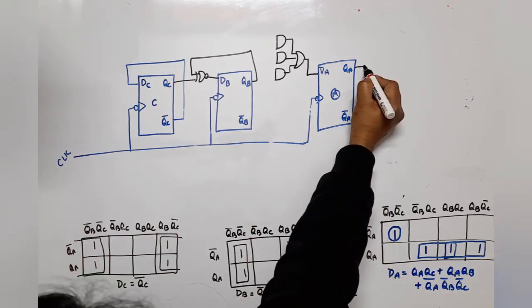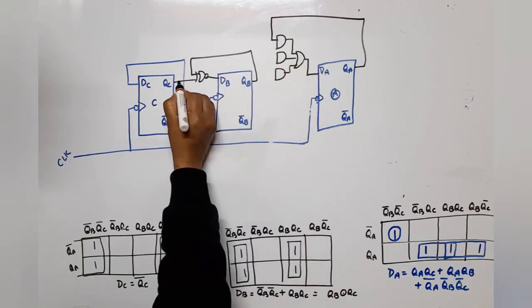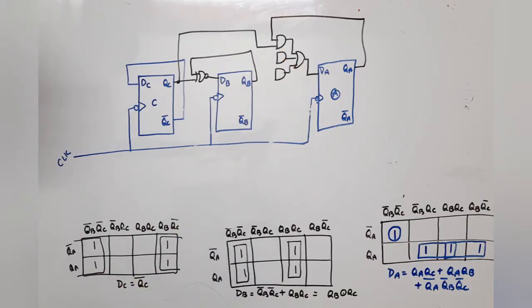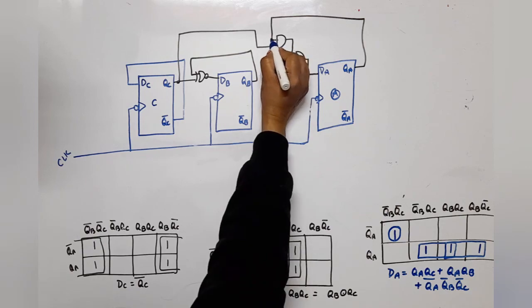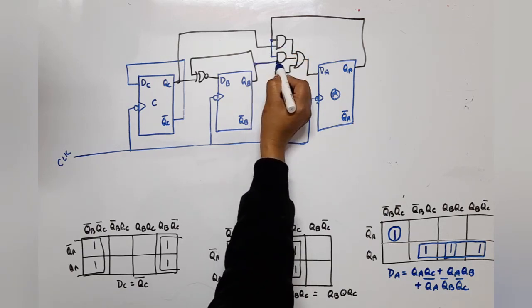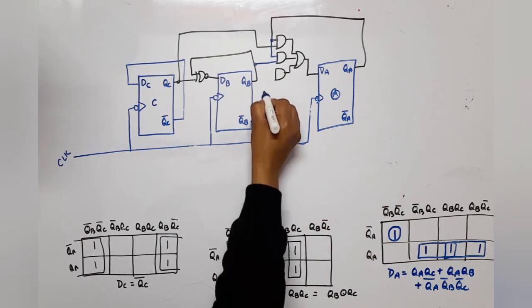Next is QA QB, QA QB means this was QA connected and this was QB connected. Last is QA bar QB bar QC bar. QB bar done.